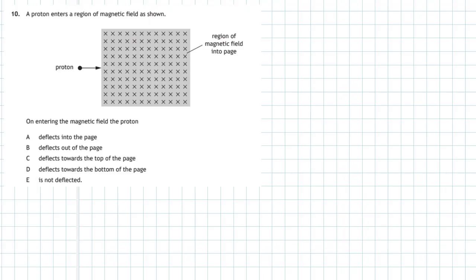Question 10 from Section 1 of the 2018 Higher Physics examination. A proton enters a region of magnetic field as shown. On entering the magnetic field, the proton — we're given five choices — which direction will the proton go? First of all, a proton is a positive charge, and secondly the magnetic field is pointing into the screen as we look at it.